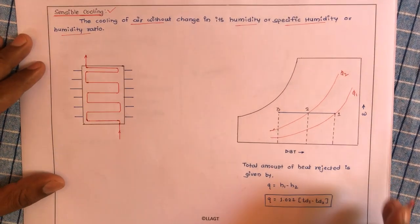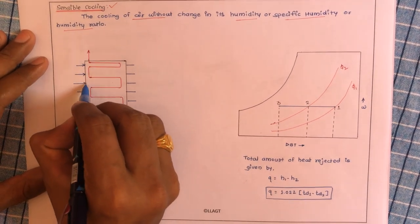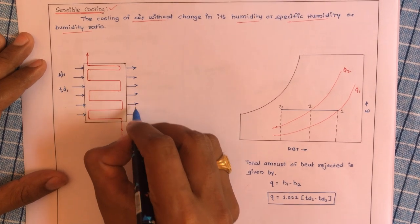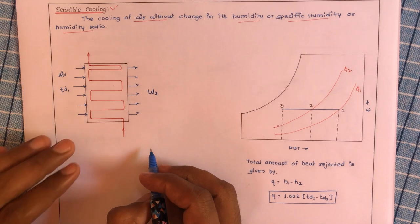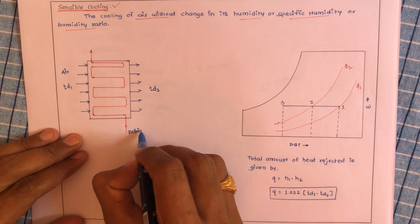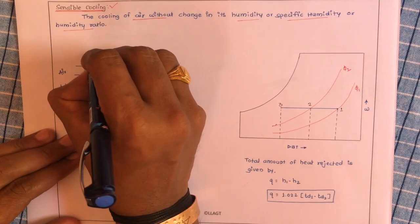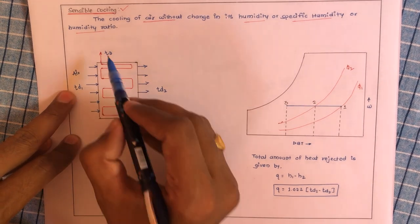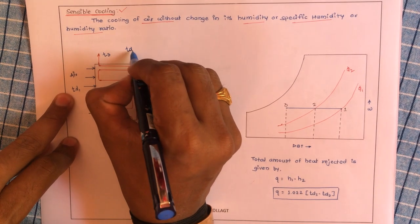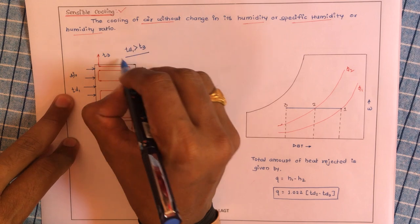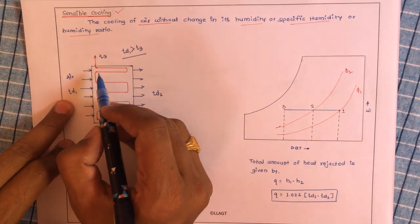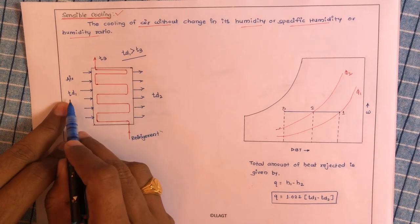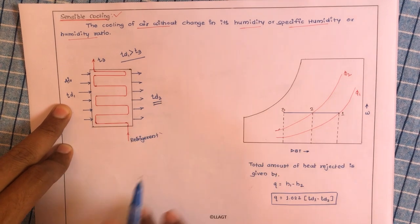We are having air which is at temperature Td1, and the same air is leaving at temperature Td2. There is a cooling coil — or we can say a refrigerant passed through these coils — which is at temperature T3. There is a temperature difference between Td1 and T3, where Td1 is greater than T3. As a result, heat is transferred from the air towards the refrigerant coil, giving us a lower outlet temperature Td2.